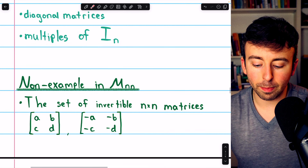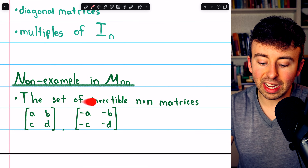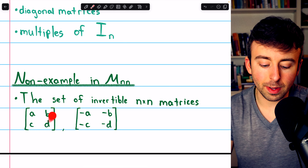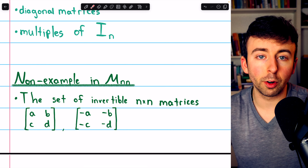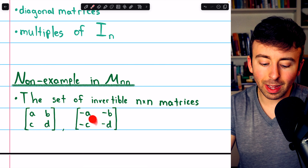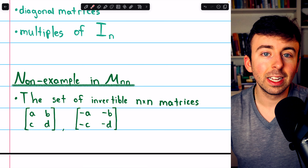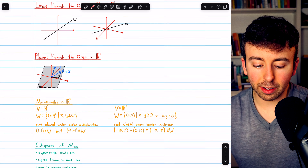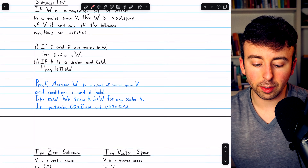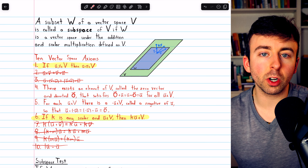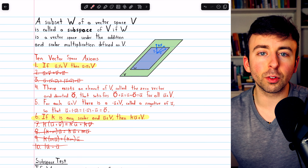Let's finish with a non-example of the square matrices. The set of invertible n by n matrices is not a subspace of all n by n matrices. For a two-by-two example: the invertible matrix with entries A, B, C, D and its negative — entries −A, −B, −C, −D — are both invertible, but adding them together gives the zero matrix, which is not invertible. So the invertible matrices are not closed under matrix addition and thus not a subspace. That's what a subspace is and how we can prove a non-empty subset is a subspace using the subspace test.